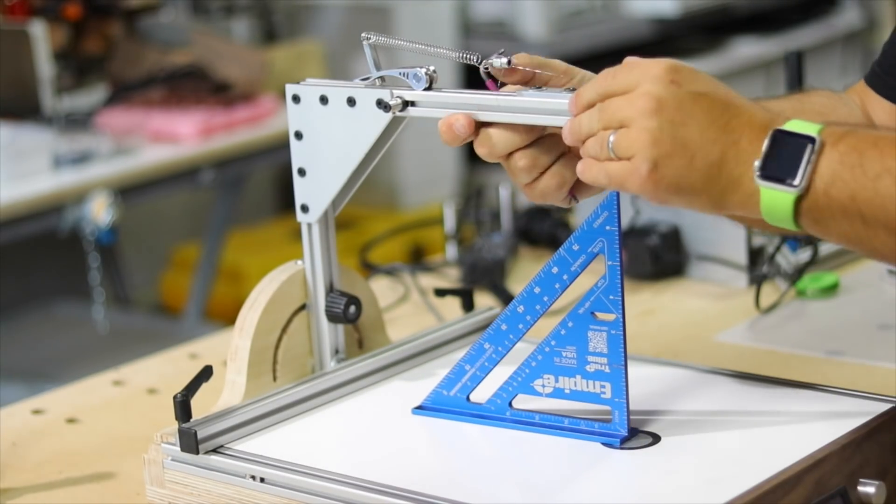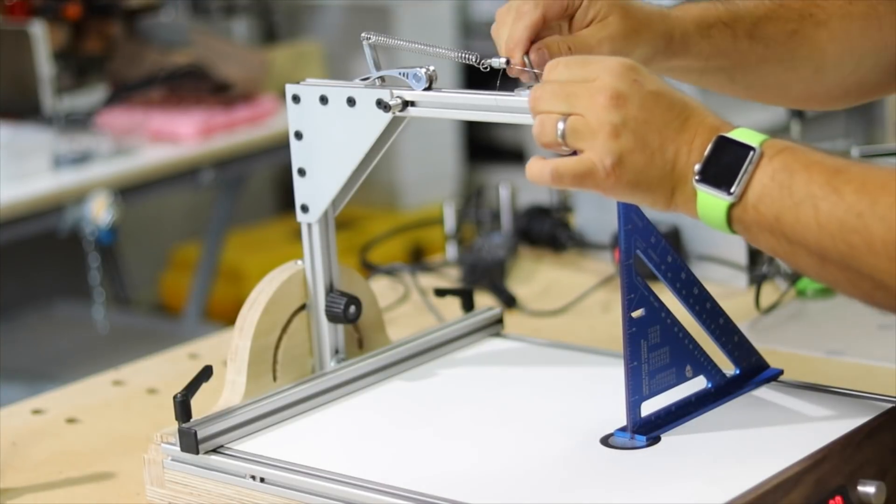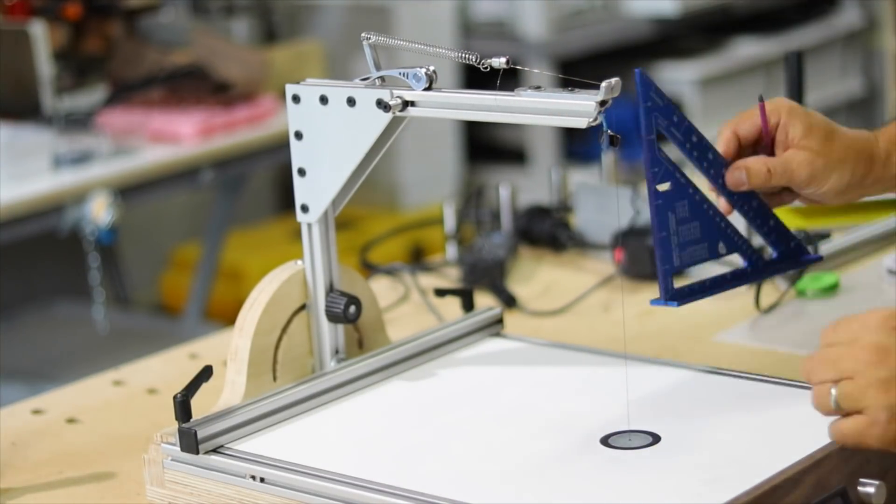Here you can see how easy it is to set the wire to 90 degrees. Using a carpenter square, just adjust the micro adjuster.